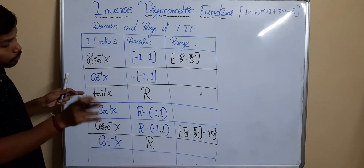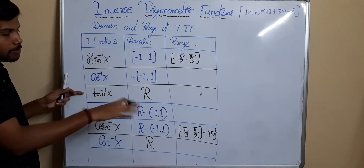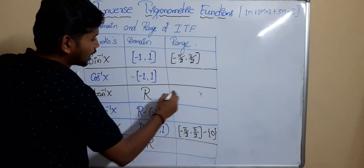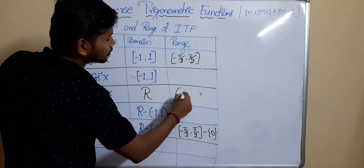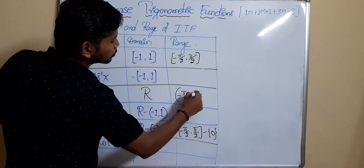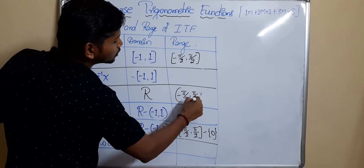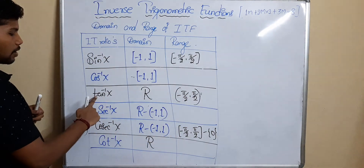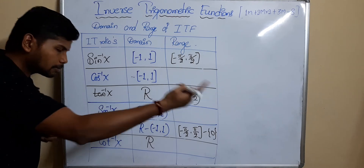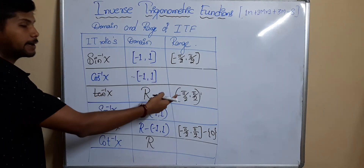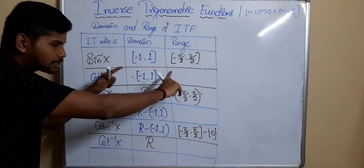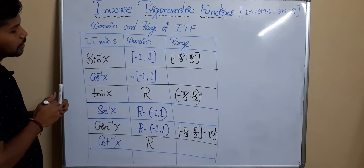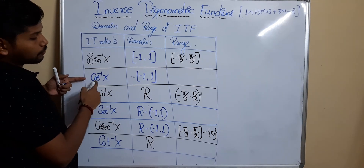One more inverse trigonometric function has a similar range but slightly different — that is tan⁻¹(x). Its range is (-π/2, +π/2), an open interval. It is open because tan(π/2) and tan(-π/2) are both indeterminate, so those endpoints are excluded.